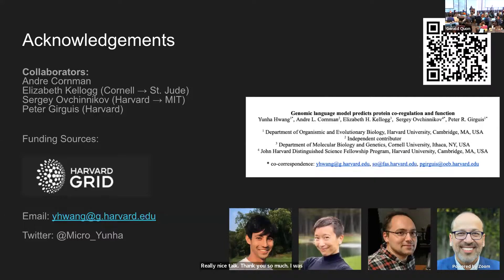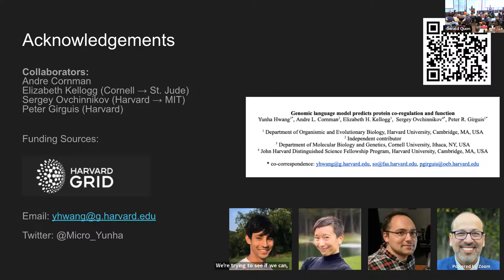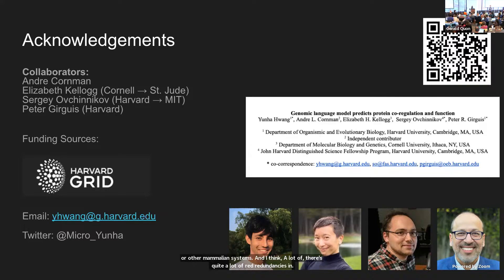Q: Since you only used microbial data, how would it apply to eukaryotic organisms that have interactions between genes through multiple chromosomes, or isoforms? A: We're working on pre-training largely on microbial data to capture the diversity present in nature, and then fine-tuning on human genomic data to see if that knowledge transfers to mammalian systems. There are quite a lot of redundancies in cellular mechanisms, and even if a sequence is totally different, if we can map the evolutionary pathway, we can infer novel interactions that wouldn't have been possible without looking at the full picture.